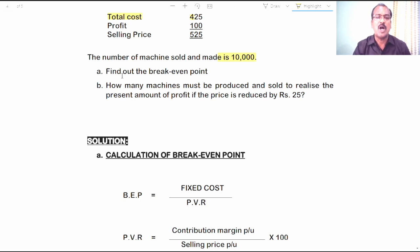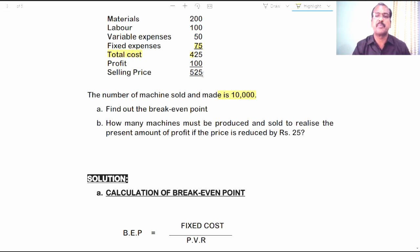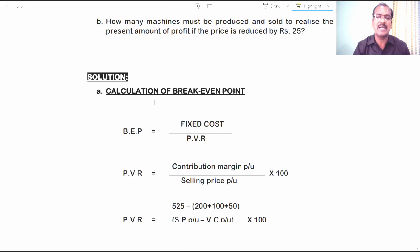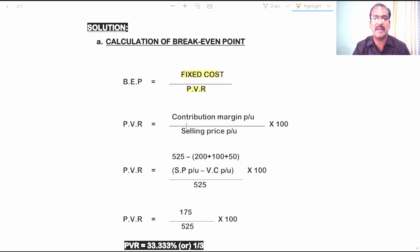Now, how many machines must be produced and sold to realize the present amount of profit if the price is reduced by 25 rupees? If the price from 525 comes down to 500 rupees per unit, how many units must be produced in order to earn the same amount of total profit which we are earning now? Let us calculate the break-even point.